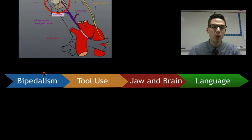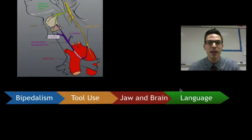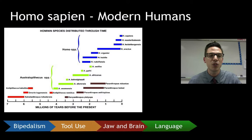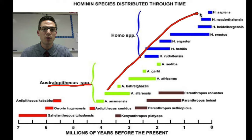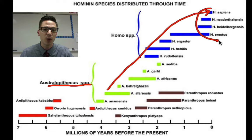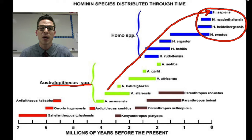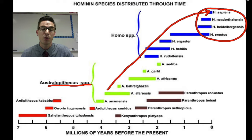So when you have a bipedal organism using tools, with a smaller jaw and larger brain, that develops language, what you get is today's modern human — homo sapiens. Here's a timeline of all the different hominids that existed over the past few million years, starting with Australopithecus where bipedalism first evolved, up to modern homo sapiens. There were over a dozen different hominids that once walked this planet, and at some point multiple hominids existed at the same time — homo sapiens alongside homo neanderthalensis, homo heidelbergensis, and homo erectus. We were the only ones to survive.